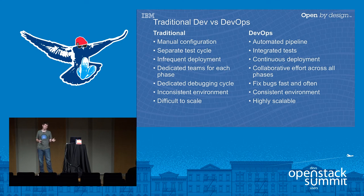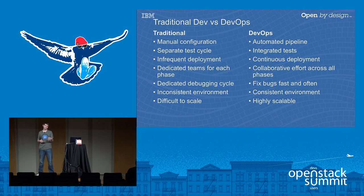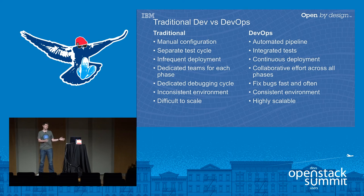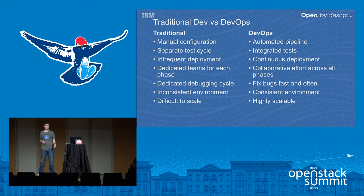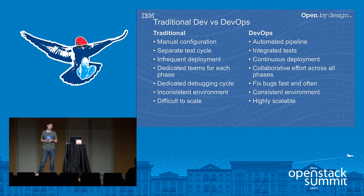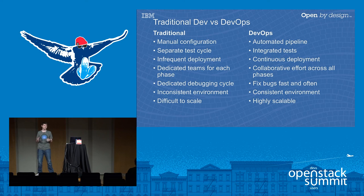The test team goes over and tests various aspects, then passes back for the debugging cycle. Next is infrequent deployment — because you're waiting for the development cycle to finish, then the test cycle, then the debugging cycle. Then finally you deploy. This leads to dedicated teams for each phase: a development team, a test team, then the development team comes back to debug, and you might have a team dedicated to just deploying. And then after the test team has spent however many weeks or days, they pass it back to the development team to fix as much as they can while still trying to reach that particular deployment cycle.